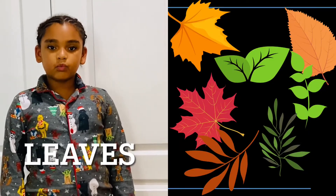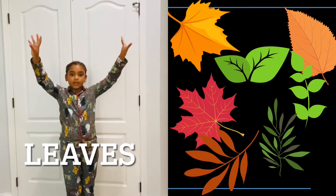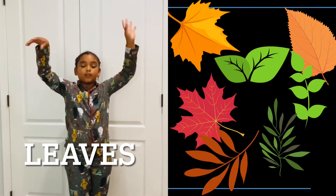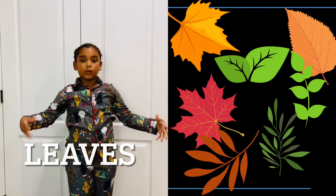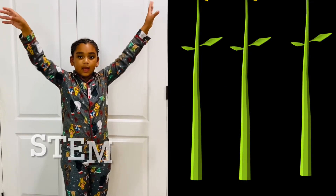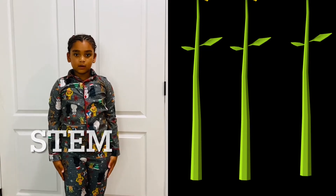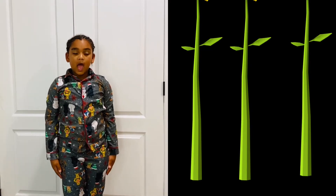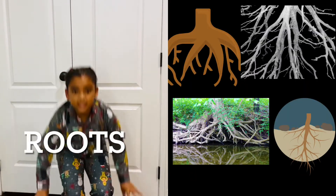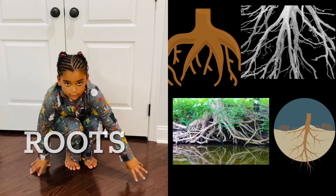For leaves, we'll be doing this because of a tree, and we'll be doing this because the wind is blowing the leaves. For stem, we'll be doing this because the stem is very straight. And for roots, we'll be doing this and ducking down because our roots are in the soil.